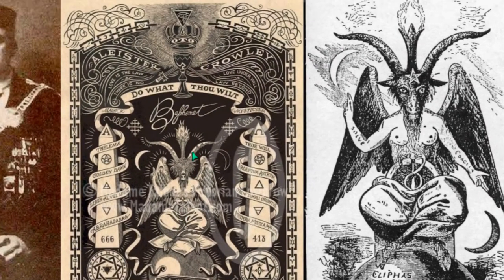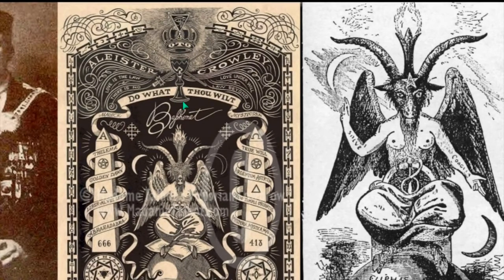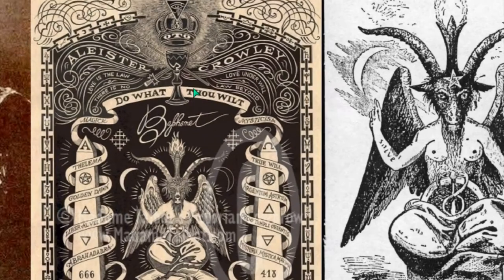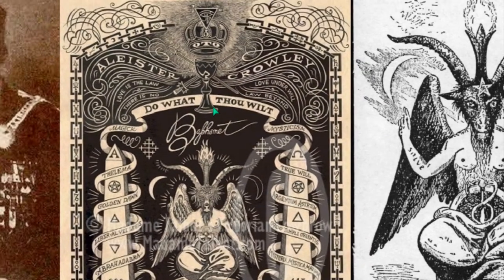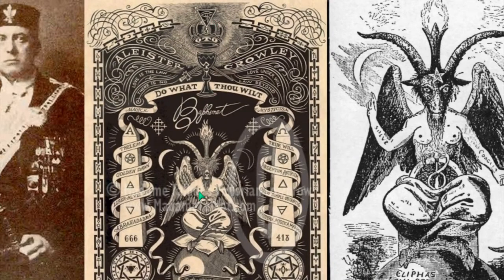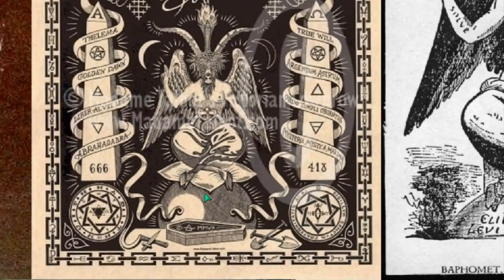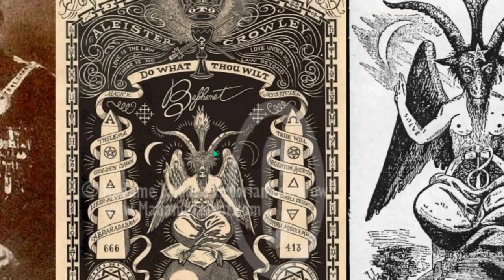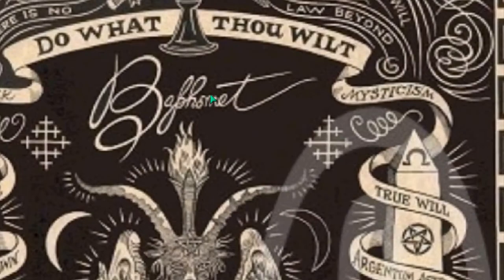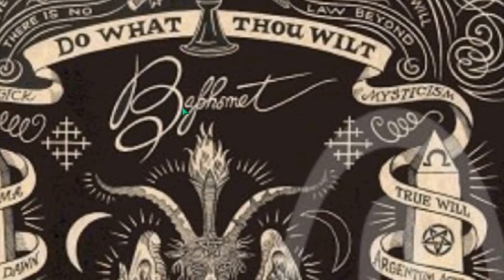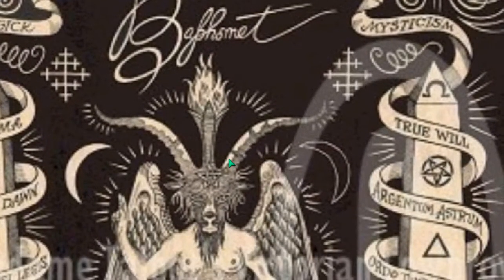I wanted to show you that this is a poster that was done by an occultist and Satanist, Madame Talbot. She was an actress and when Aleister Crowley died she made this poster for him and it's riddled with all of the Satanic symbolism. One in particular I want to show you is the Baphomet. You see this stylized Baphomet and you see this being here.